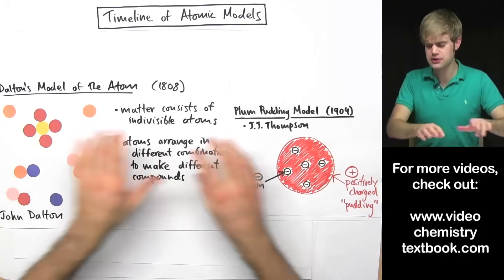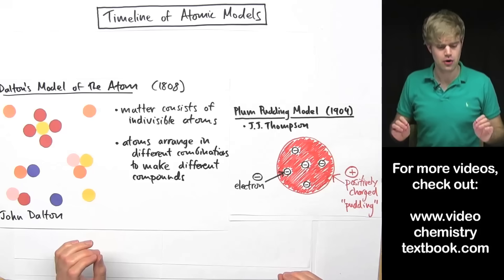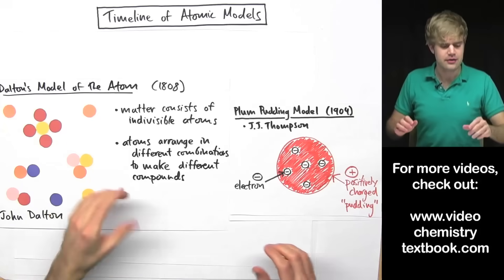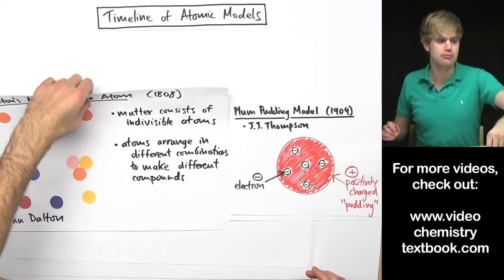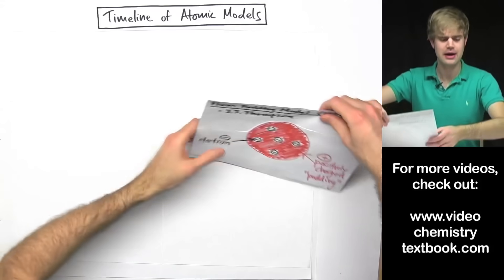But the big change from Dalton's model to Thompson's model was showing that atoms weren't actually indivisible, that they were made of even smaller things.